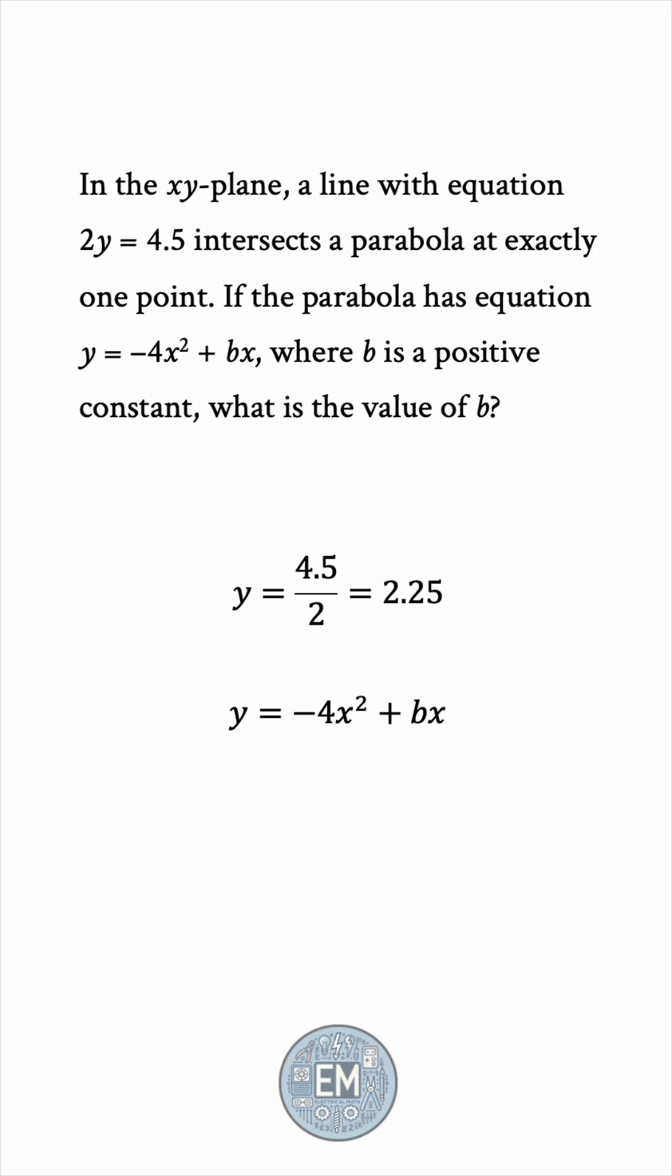So we can find the intersection point from the equation negative 4x squared plus bx equals 2.25. Let's move the 2.25 to the other side, so that this becomes the typical quadratic equation structure we are familiar with.